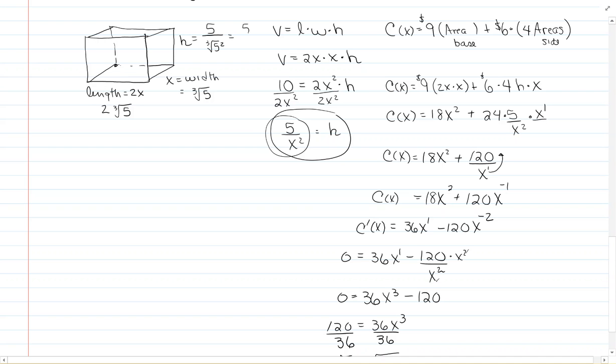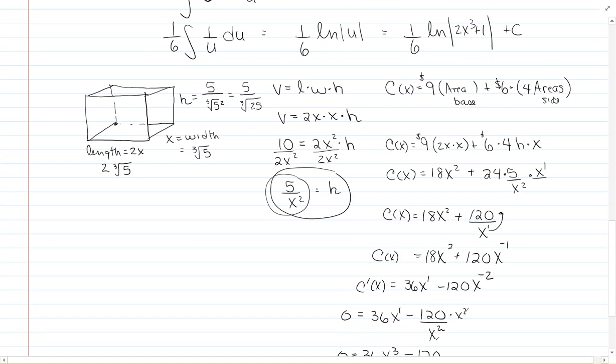You can simplify this in various ways. If you left it as the cube root of 25, you'd be fine, but it does reduce to the cube root of 5. This fraction is 5 over 5 to the 2/3 power, so when you subtract the exponents you get 5 to the 1/3, which is the cube root of 5.